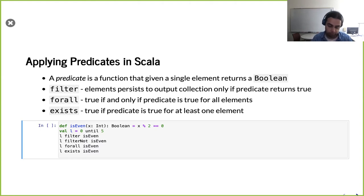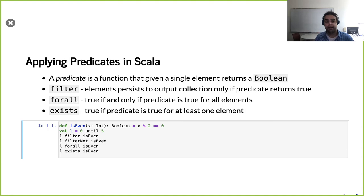So far we've been taking operations that directly modify the data — we've been mapping it, doing something to it. Alternatively, there are collective operations that work with what's called a predicate. A predicate is a function that, given a single element, returns a Boolean — true or false. Depending on which operation we give it, we can change the behavior. For example, filter: if the predicate is true, we keep the item; if false, we don't. So it's a way to downsize our collections.